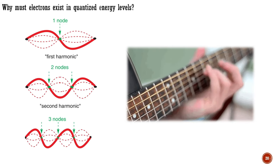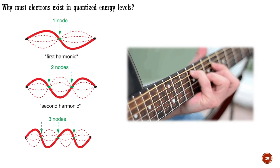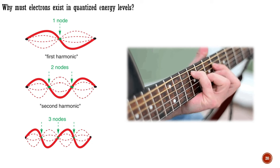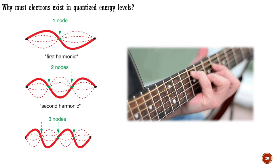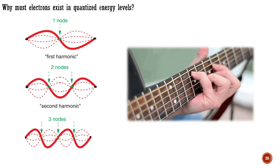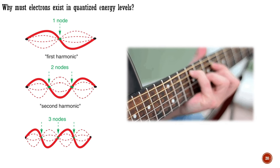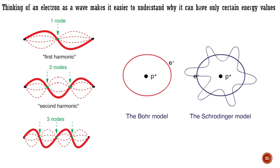Even if you are new to this concept in music or physics, you can see that the vibrating string must adopt one of these quantized frequencies. This is because the fixed ends of the string require the wavelength to be an exact divisor of the string's length. Frequencies are directly linked to energies. The energy levels of a vibrating string are quantized. Thinking of an electron as a wave makes it easier to understand why it can have only certain energy values.